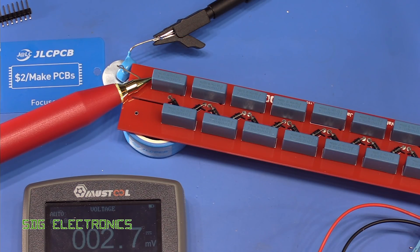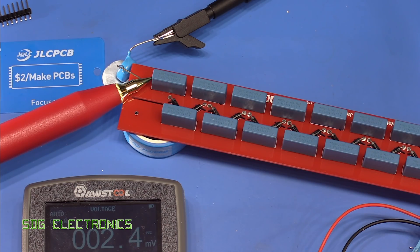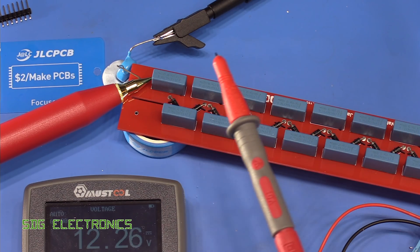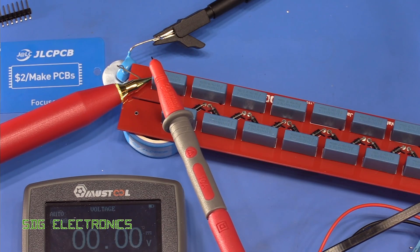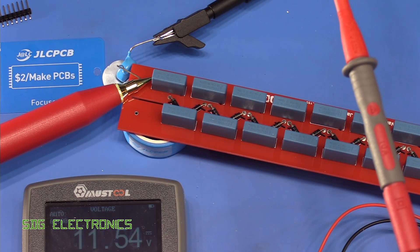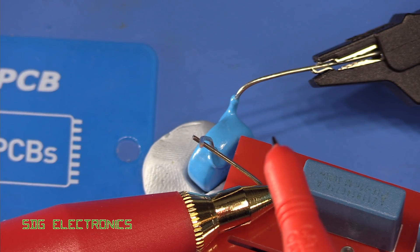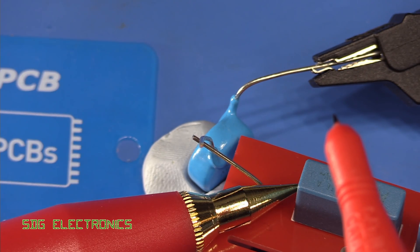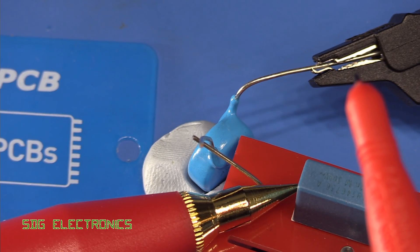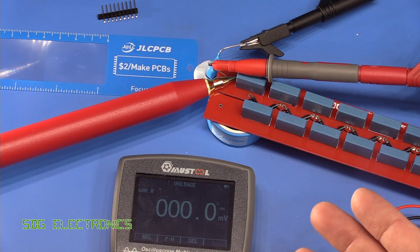So this time we've got one of these 150 picofarad capacitors connected to the output of the multiplier. Let's see if we're still able to reach our 12 kV output. Let's turn on the input. And that's quite quickly got all the way up to 12 kV. Let's try discharging it. That's a pretty good discharge. I'm not sure if it's showing up on camera because of the speed. Yeah, it seems to work pretty well.